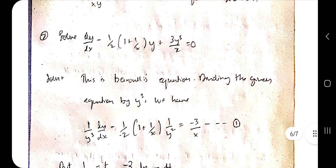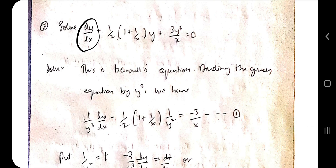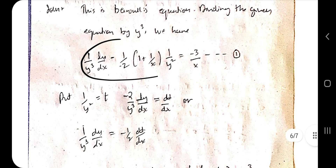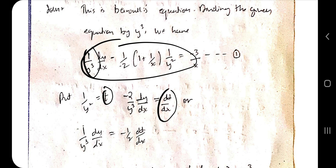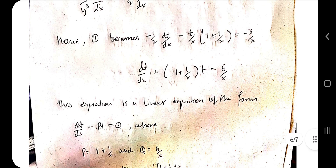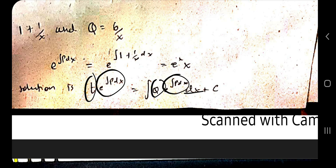Substitute the values, find the integration, get the final answer, then substitute back t in terms of y to get the required equation. For the next Bernoulli's example, with dy/dx minus Py equal to Q times y-to-the-n where n equals 3, divide the whole equation by y-cubed. Let t equal 1/y-squared, find dt/dx, substitute into the equation and rearrange into Bernoulli's form. Apply the same integrating factor formula: e-to-the-power integral of P dx.